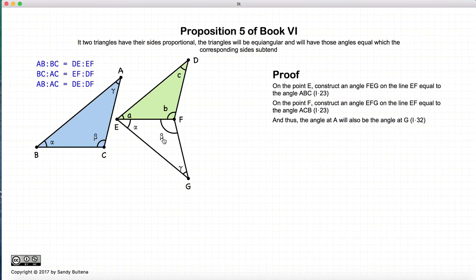Now if we look at these two triangles, we have alpha, beta, alpha, beta. Since the sum of all the angles is equal to 180 degrees, this angle here must be the same as the angle there. That's Proposition 32 of Book 1.